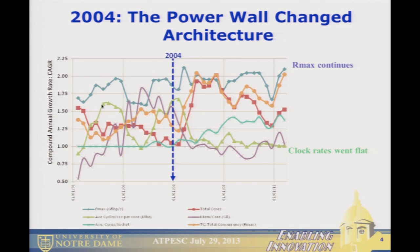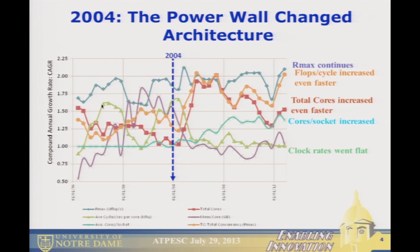Cores per socket increased, and the total cores in the system increased even further. The flops per cycle increased even faster than that — the number of flops that you as a programmer had to worry about. And memory per core went flat or has actually begun to decline. So that's an indication that something nasty might be happening.